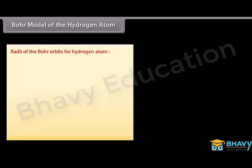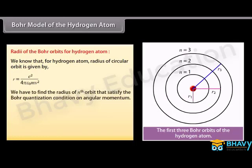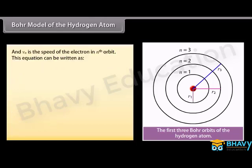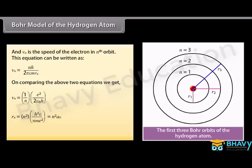Radii of Bohr orbits of hydrogen atom: For hydrogen, the radius of a circular orbit is r = e²/(4πε₀mv²). For the nth orbit satisfying Bohr's quantization condition, L_n = mv_n r_n = nh/2π, where n = 1, 2, 3, ... and v_n is the electron speed in the nth orbit. Solving these equations gives v_n = (1/n) × e²/(2ε₀h) and r_n = n² × ε₀h²/(πme²) = n² a₀, where a₀ = 0.529 Å is the Bohr radius.